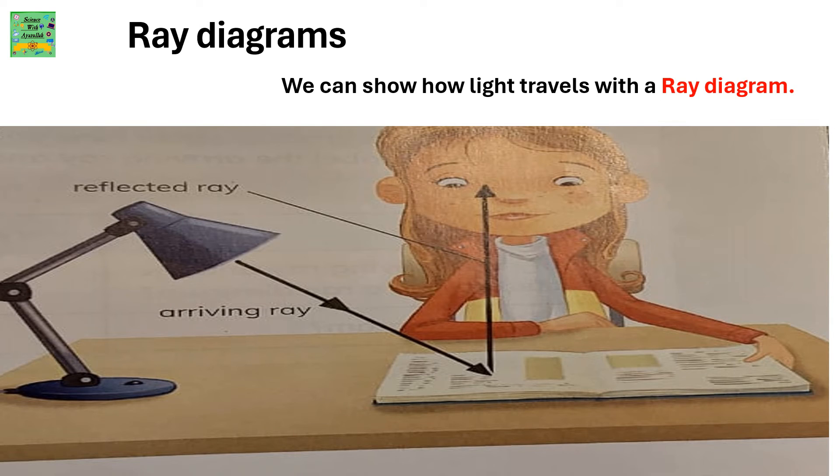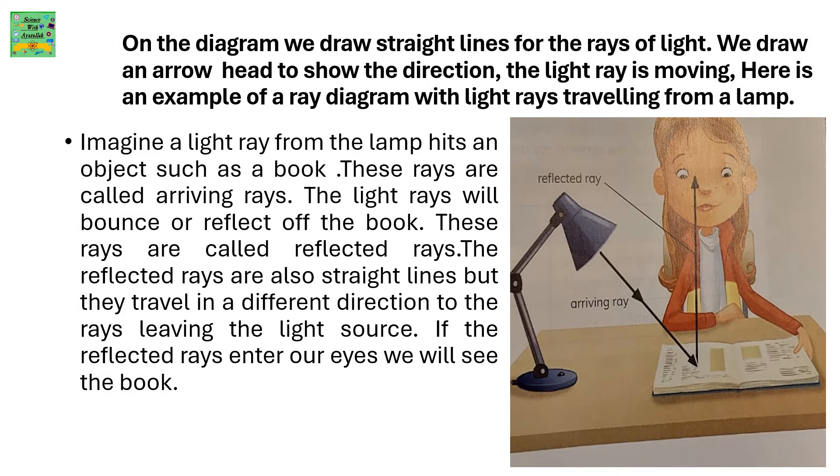Ray Diagrams: We can show how light travels with a ray diagram. On the diagram, we draw straight lines for the rays of light. We draw an arrowhead to show the direction the light ray is moving. Here is an example of a ray diagram with light rays traveling from a lamp.